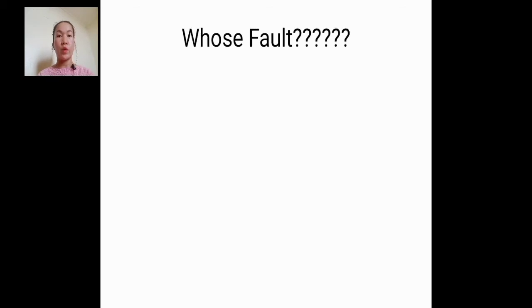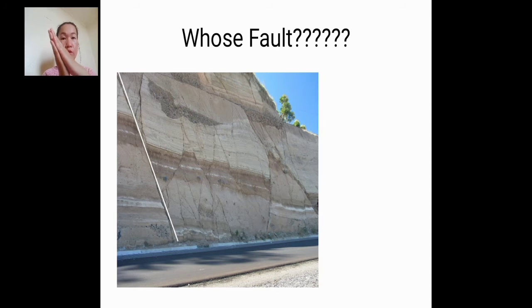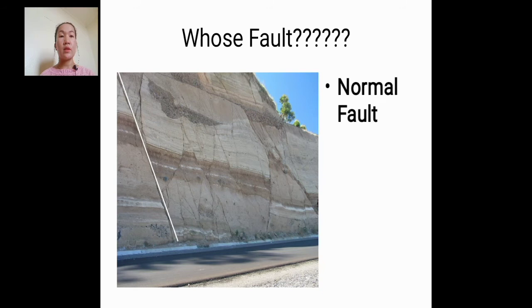Now I will show you pictures and you will identify what kind of fault is illustrated. This exercise is entitled 'Whose Fault.' So first picture — what kind of fault is shown here? Gamitin natin yung kamay natin — inclined yung fault, so i-incline natin yung kamay natin, i-zoom doon sa pattern nasa picture. Yung part na nasa taas ay bumaba — so ano kind of fault yan? Normal fault kasi yung hanging wall ay nag-move pababa.